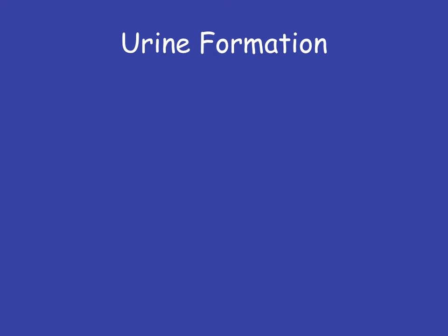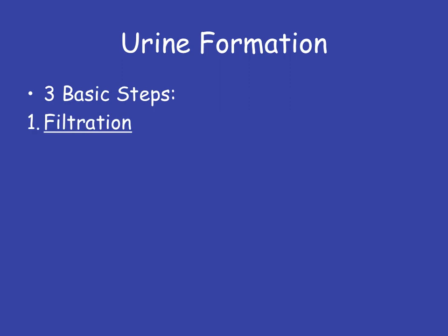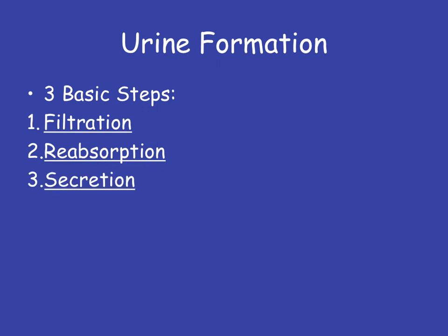So let's first talk about urine formation. Urine formation happens in three steps. The first step is filtration — we filter the blood and basically push everything out. Then we get reabsorption of the things that we need or want back into the blood, and then finally secretion, where we actually purposely put certain components into the blood so that it can be taken out via the urine.